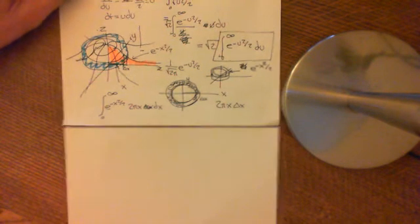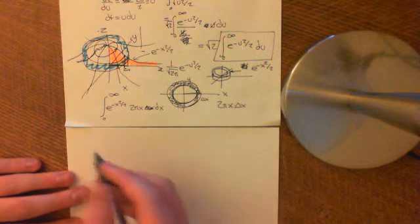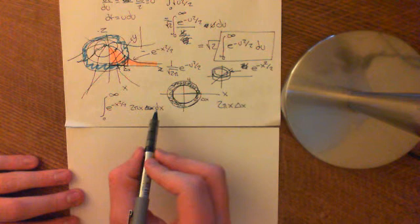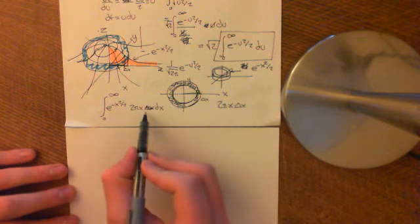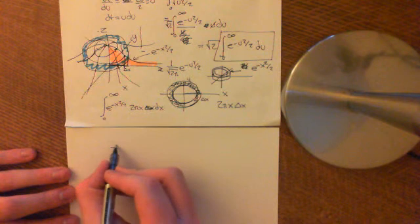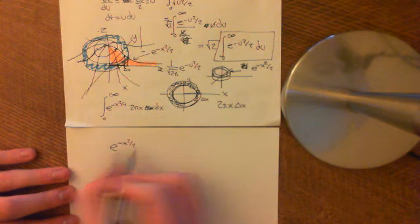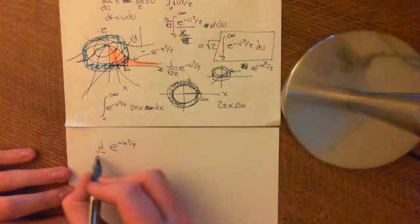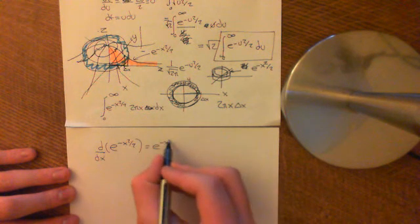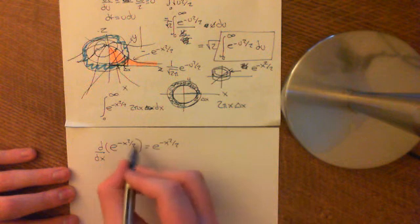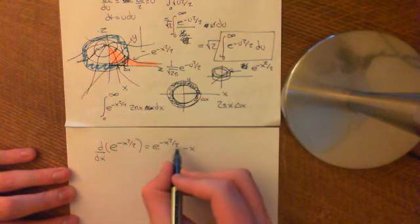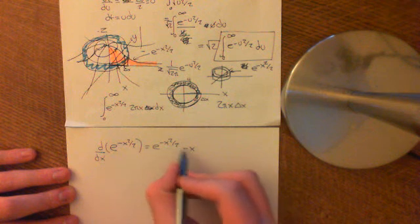Let's perform that integral now, which is quite easy because we just invert the chain rule. By the second fundamental theorem of calculus, we need an antiderivative. If we consider differentiating e to the negative x squared over 2, we get e to the negative x squared over 2 times negative x — the chain rule says differentiate the inside, bringing down the power which cancels with the 2, giving negative x. So we get negative x times e to the negative x squared over 2.